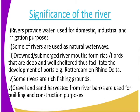What are the significance of the river? One, rivers provide water that is used domestically, by industries, and also for irrigation purposes. Number two, some rivers are used as natural waterways, as some rivers are navigable. Number three, submerged river mouths form fjords that are deep and well sheltered, and these facilitate the development of ports — an example being Rotterdam on the Rhine Delta. Number four, some rivers are rich fishing grounds, hence we get fish from them.